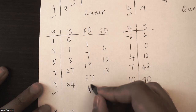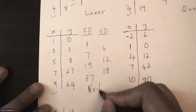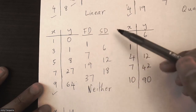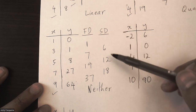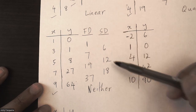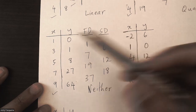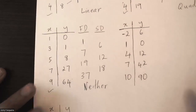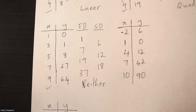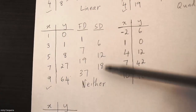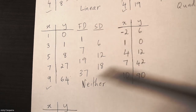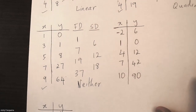My second differences are not the same and my first differences are not the same, so this equation is neither. If you go into third differences you'll get all 6s, so it's actually cubic — but in grade 10 you don't need to worry about that. It just shows you can keep going with higher-degree equations.